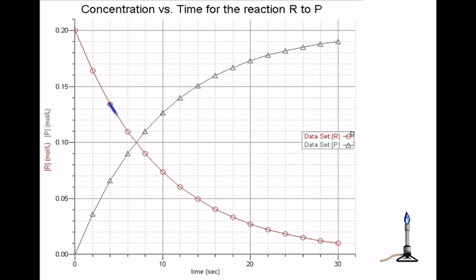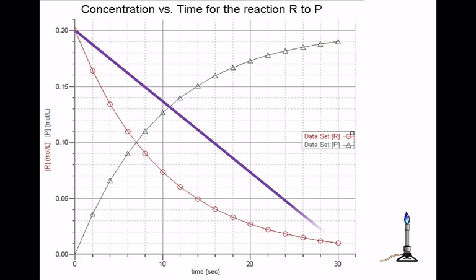We could take the slope between various pairs of points, and if you notice, the slope is getting less — the rate is getting less. You can choose any two points and get a rate, but know that you're calculating a moving target. It's fastest at the beginning. Later on we're going to talk about initial rates, which are basically the tangent to the curve at the start. You could take the rate from time zero to ten seconds, or from zero to thirty seconds, and you'd get a different value each time.